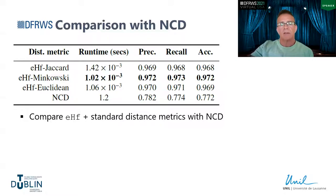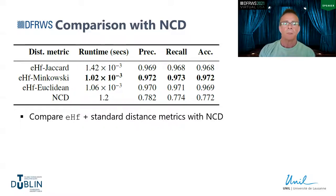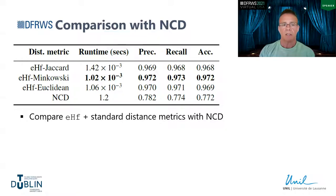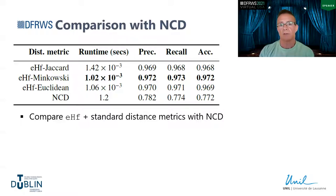I ran a comparison with NCD — even though NCD is primarily a distance metric — to show that EHF could be used with a standard distance metric for efficient similarity comparisons. The Minkowski-EHF algorithm ran at roughly 1 millisecond per comparison, as opposed to 1.2 seconds with NCD, which is about three orders of magnitude slower. The Minkowski-EHF algorithm also outperformed NCD by roughly 20%, proving that EHF combined with a standard distance metric is a viable method for similarity measurements for malware.